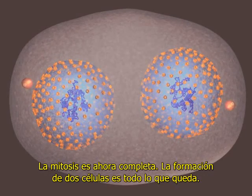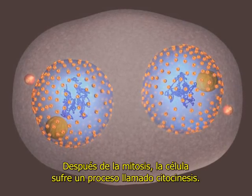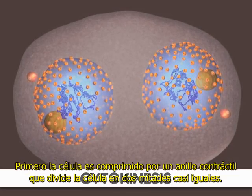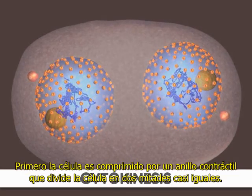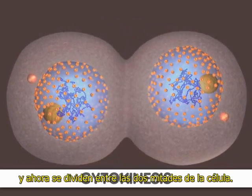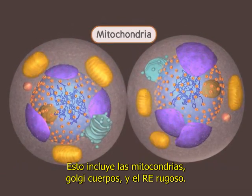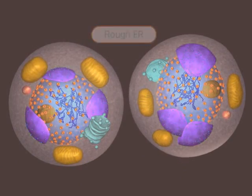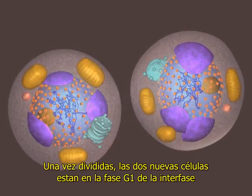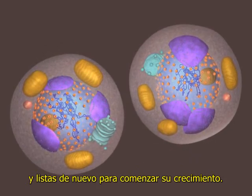The formation of two cells is all that remains. Following mitosis, the cell undergoes a process called cytokinesis. First, the cell is compressed by a contractile ring that divides the cell in nearly equal halves. By now, the organelles in the cell have been replicated and are divided between the two halves, including mitochondria, Golgi bodies, and the rough ER. Plant cells also have chloroplasts. Once split, the two new cells are fully in the G1 stage of interphase and ready to begin their growth.